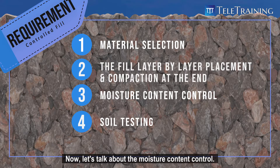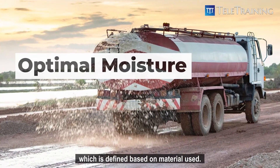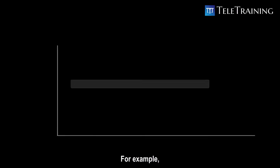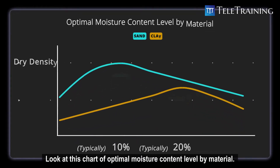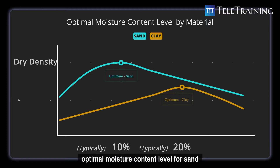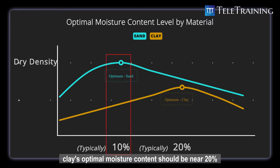Now let's talk about moisture content control. The moisture content in fill should be maintained at the optimized level, which is defined based on the material used. Looking at a chart of optimal moisture content levels by material, the blue line for sand shows that optimal moisture content should typically be maintained at less than 10%, while the yellow line for clay shows that clay's optimal moisture content should be near 20%.